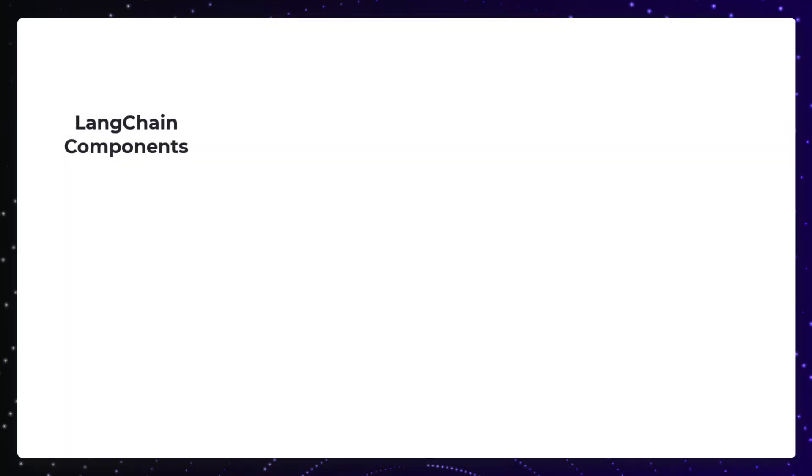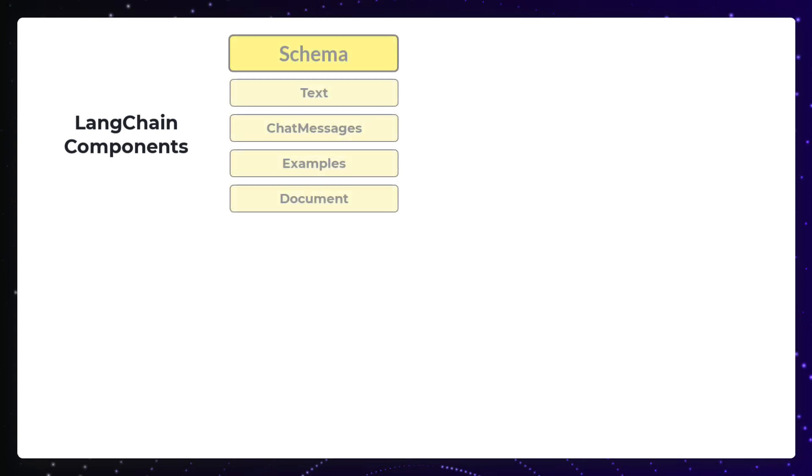LangChain can be divided conceptually into six main components and a schema describing the data types used. They include text, chat messages, examples, and document.